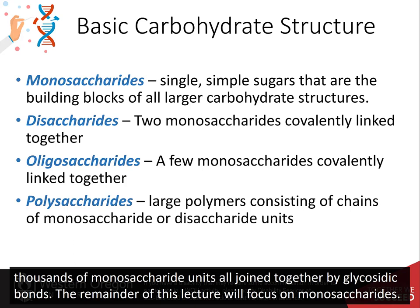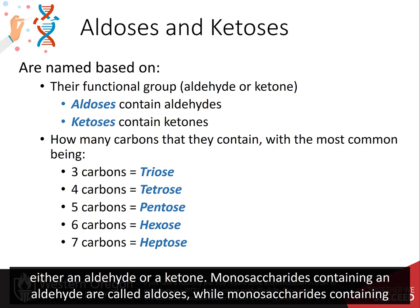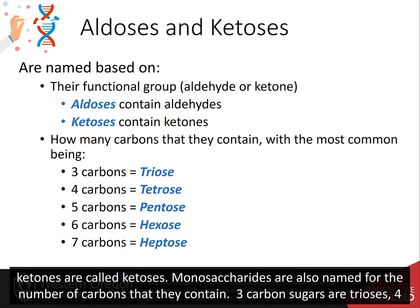Monosaccharides all have alcohol functional groups associated with them. In addition, they also have one additional functional group, either an aldehyde or a ketone. Monosaccharides containing an aldehyde are called aldoses, while monosaccharides containing ketones are called ketoses.